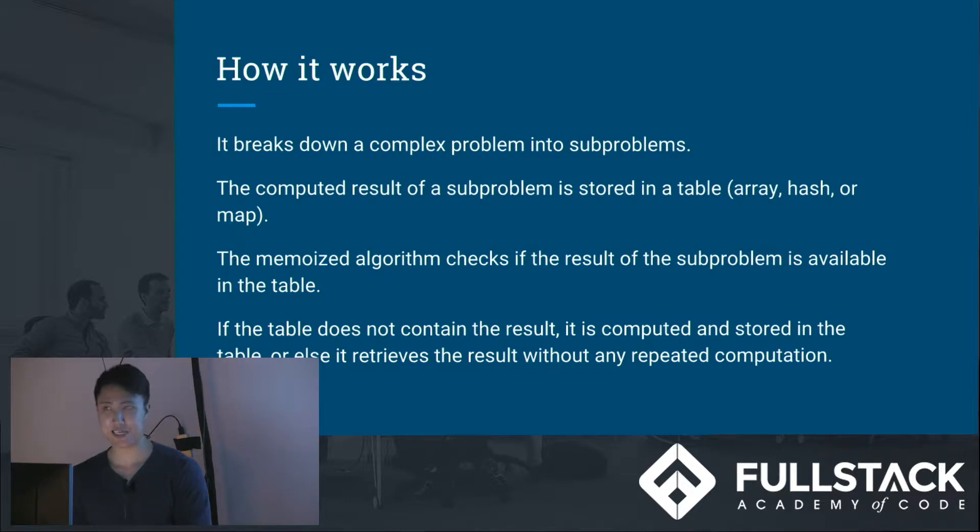You can think of it as it breaks down a complex problem into multiple sub-problems. Then the memoized algorithm checks if the sub-problem, the result of the sub-problem, is stored in a table, which could be an array, a hash, or a map. If it is available in the table, it's just going to grab that data from the table. It's not going to recompute or recalculate it.